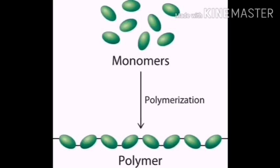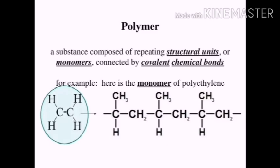When more number of monomers are combined together, a polymer is formed. The process of making polymer by the combination of monomers is called polymerization. A polymer is a substance composed of repeating structural units or monomers connected by bonds, such as covalent bonds.